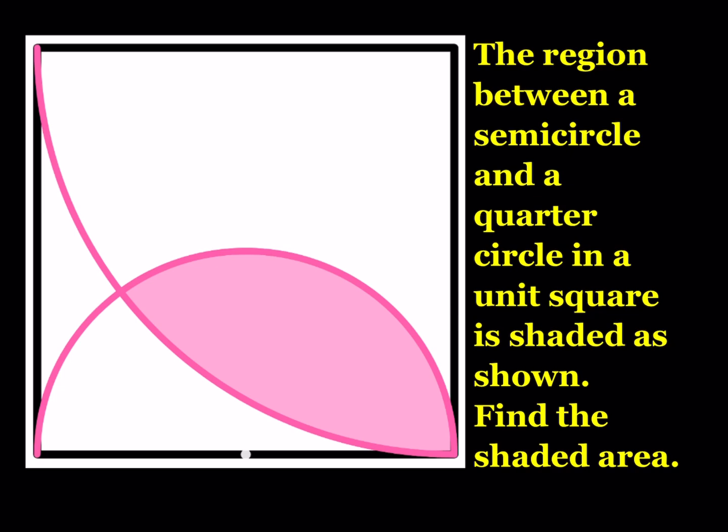We have a semicircle and a quarter circle that intersect inside a unit square, and they form a region as shown. We are going to find the shaded area. To find the shaded area, we first need to find where these curves intersect — that's an important point. Let's try to find the coordinates of that intersection point.